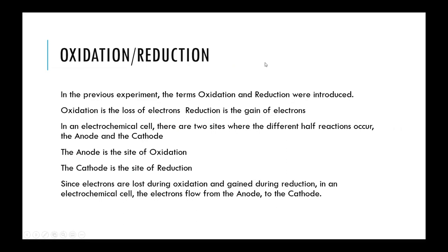As a quick recap: oxidation is the process where an electron is lost, and reduction is the gain of electrons. In an electrochemical cell, there are two separate areas termed the cathode and the anode. The anode is the spot where oxidation occurs — electrons are leaving the anode. The cathode is the site of reduction — electrons are coming to the cathode.